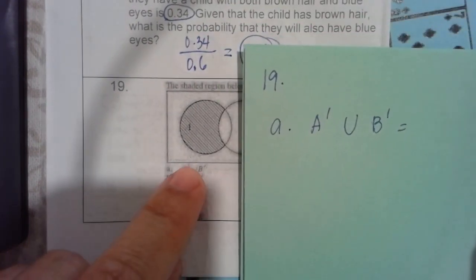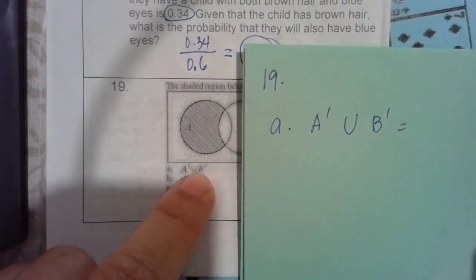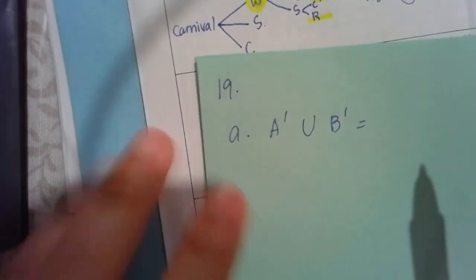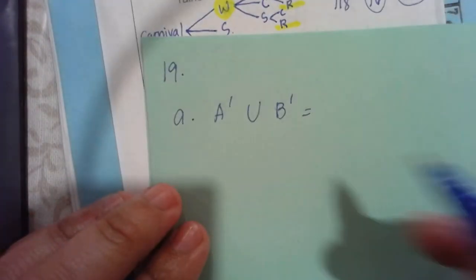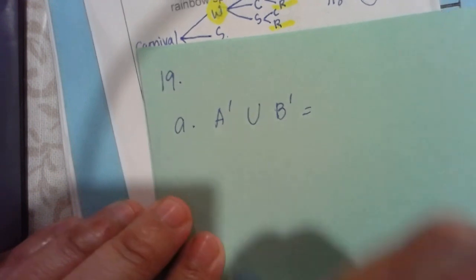Let's start. For letter A, it says A prime union of B prime. So I will represent each. So every shaded would be the answer.